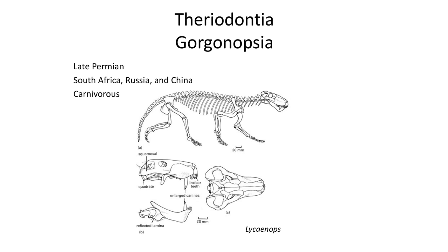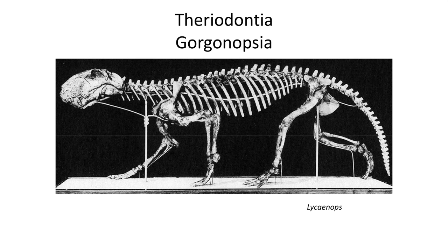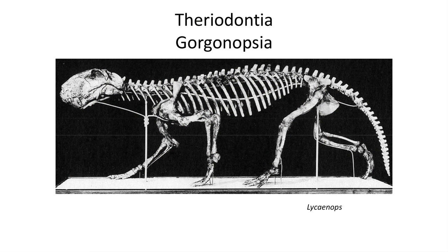Another group that survived better during the major extinction at the end of the Permian was the Therodontia. There are three groups of Therodontia. The first are the swiftest predators yet to walk the earth, the Gorgonopsia, known from Russia, South Africa, and China. The large tiger-like Lycaenops features paired, massively large canines and sharp incisor-like teeth. The eyes were moved to face forward, allowing stereoscopic vision that would aid in judging distances. The brain, while small, was expanded from earlier groups. The shoulder and pelvic girdles are slender and more integrated with an upright stance, making this a swift hunter.